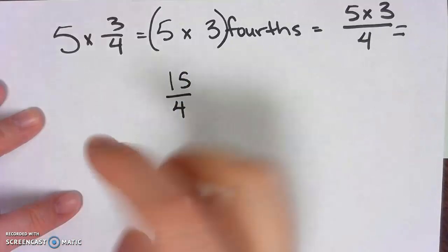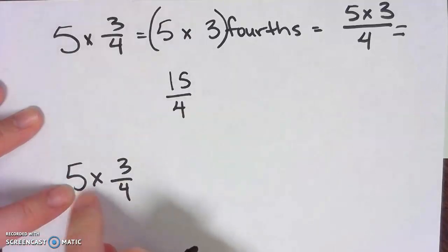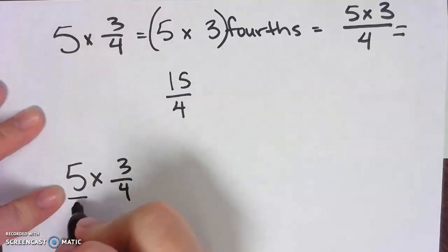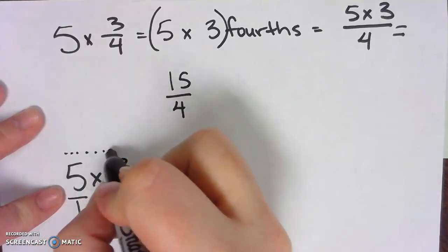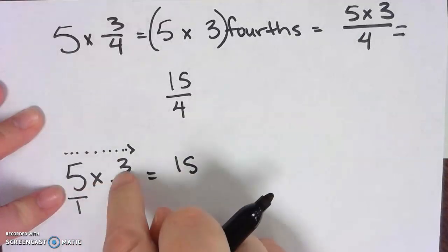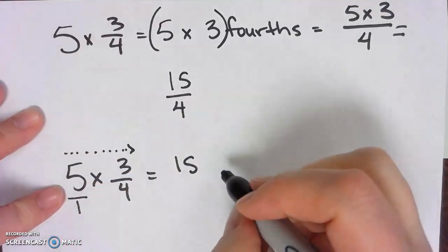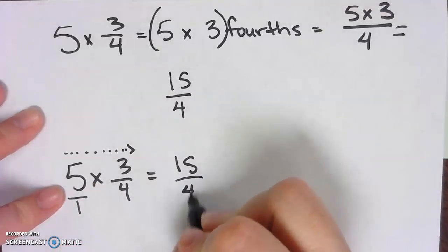Now in our class on the whiteboard, I have taught you that under every whole number is an invisible number one. And when we're multiplying fractions, we multiply straight across the top: 5 times 3 equals 15. And straight across the bottom: 1 times 4 equals 4.